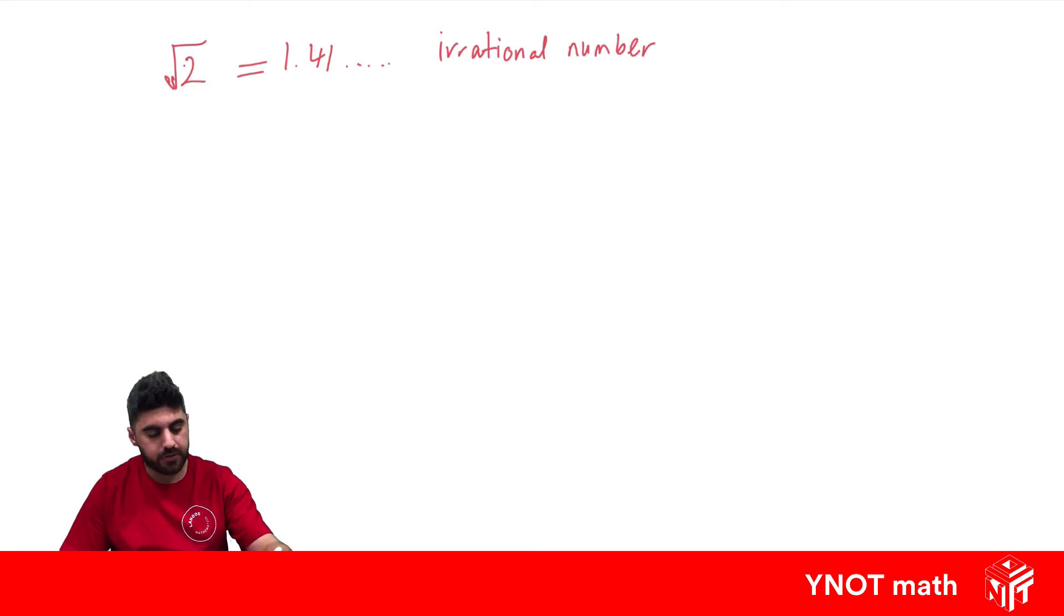And an irrational number is a number that cannot be expressed as a fraction a over b where a and b are both integers where b doesn't equal 0. So there's no two numbers we can write in fractional form that are integers that's going to give us this number that goes forever.